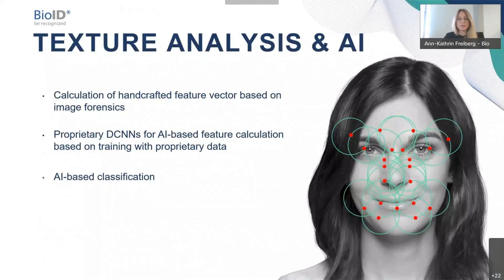We also use texture analysis and AI. We have handcrafted features for texture analysis, and we use deep convolutional neural networks trained on our data to ensure live people are detected as live and fakes are rejected. This is a complicated problem because for a two-class problem — live or fake — you need all types of fakes in the training set, and you can never be certain the system generalizes well enough to cope with unseen attacks. So this is ongoing research, already in use and very reliable, but requiring continuous modification.